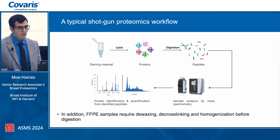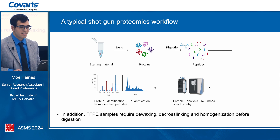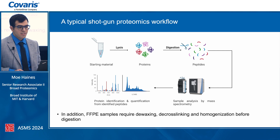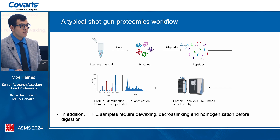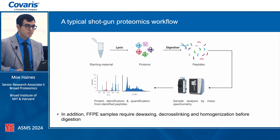A typical LC-MS shotgun proteomics experiment involves a starting material that gets sliced, proteins get extracted in a denaturing environment, digested with a protease, and then peptides get injected on a mass spectrometer for LC-MS analysis. We then sequence these peptides and trace them back to original unique proteins to quantify abundances.